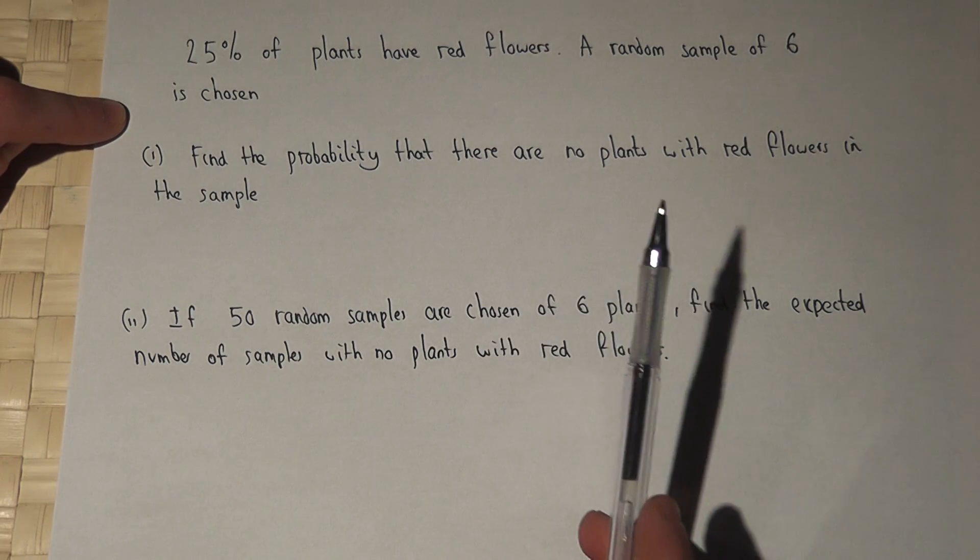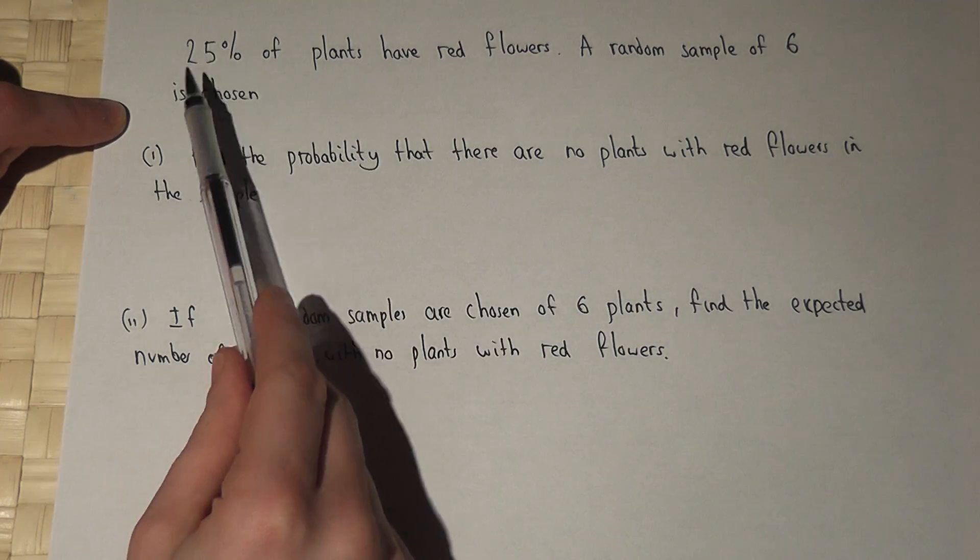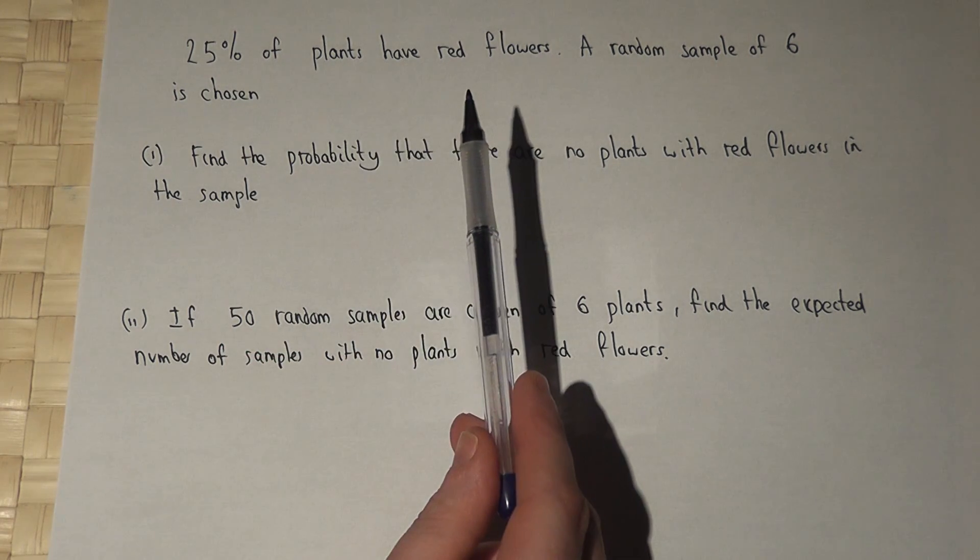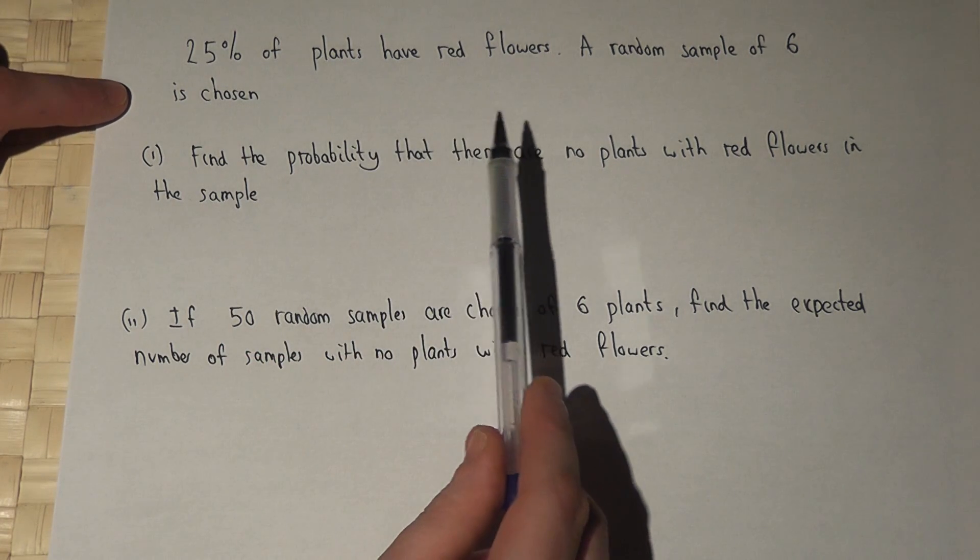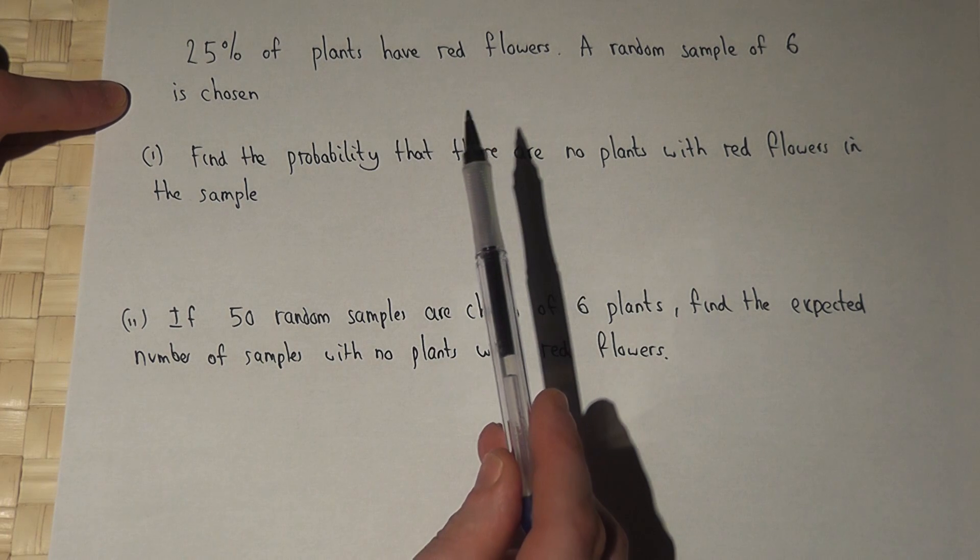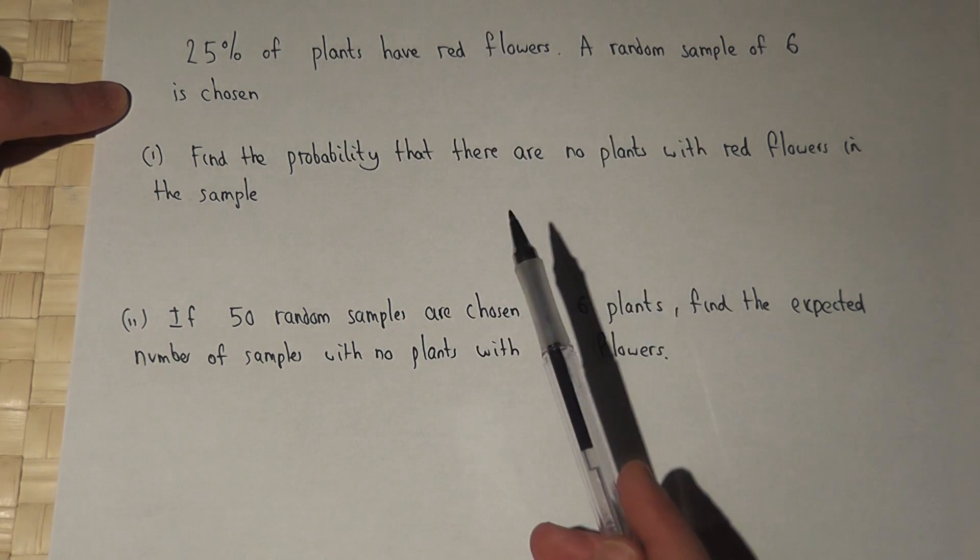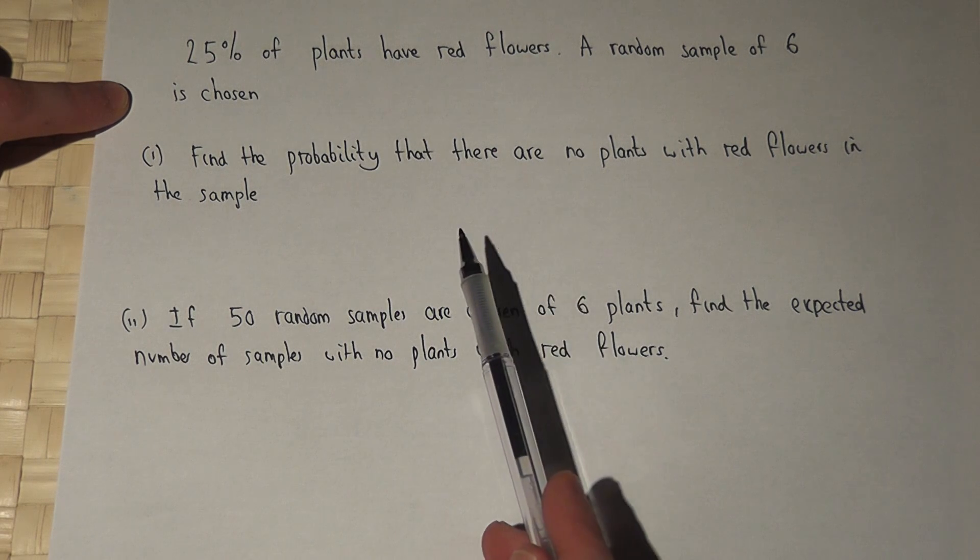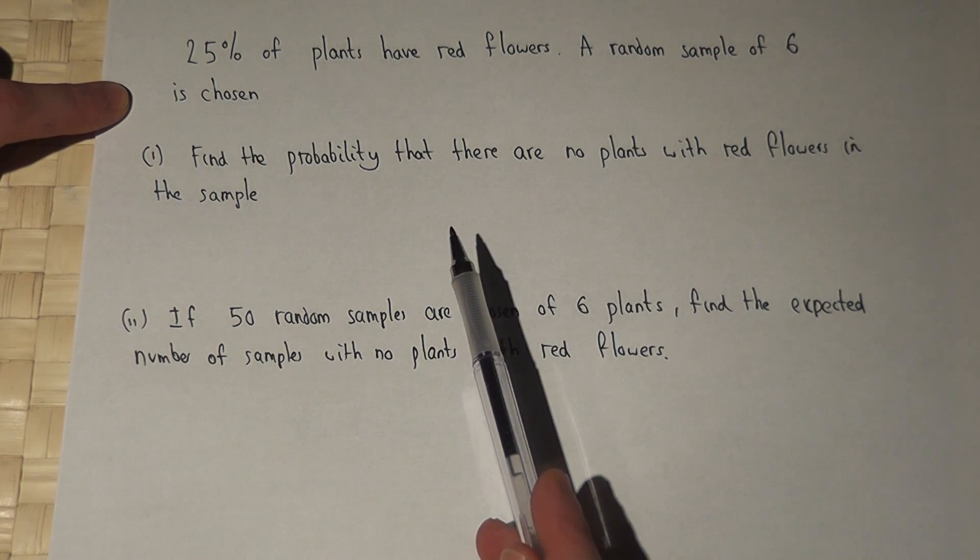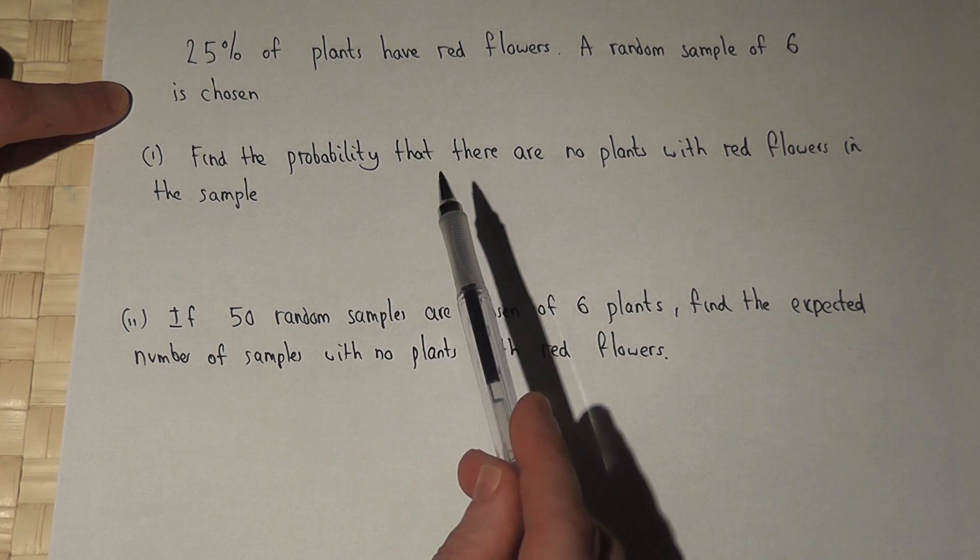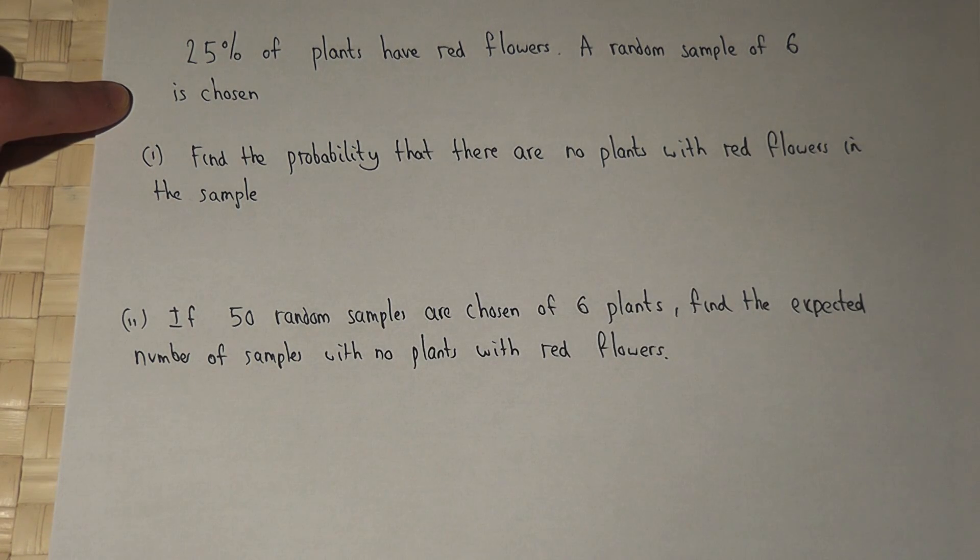For a certain species, 25% of plants have red flowers and a random sample of six such plants is chosen. We're asked to find the probability that there are no plants with red flowers in the sample.